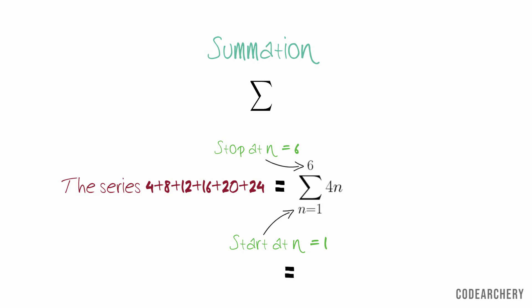And 4n is the expression for each term in the sum. So the series will look like this. The n in the series will be replaced by 1 to 6.